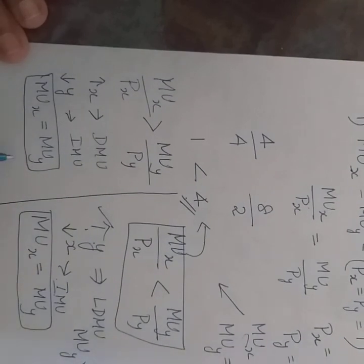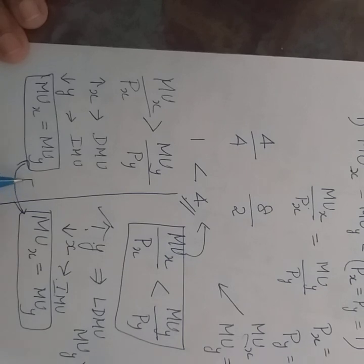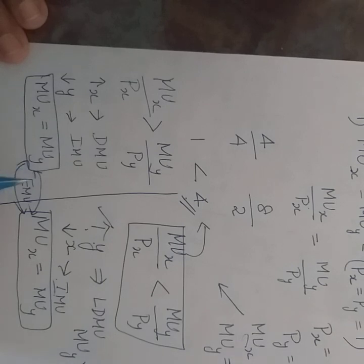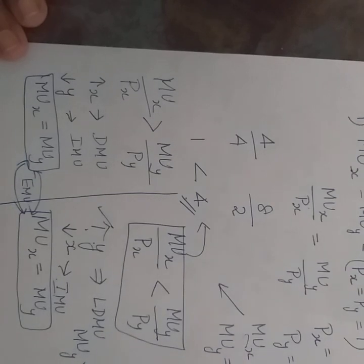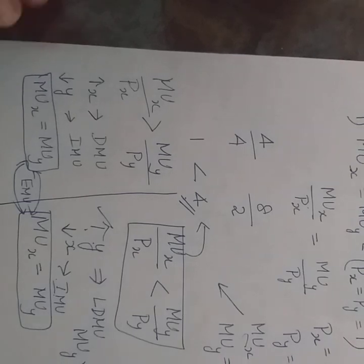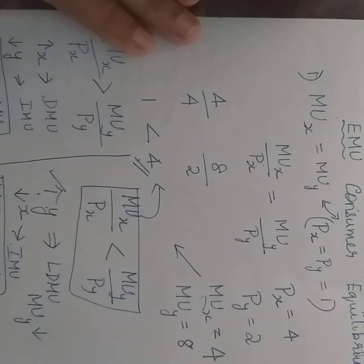This equality of marginal utilities is the condition for consumer equilibrium — this is exactly where the consumer attains equilibrium when there is equality of the marginal utilities of the two commodities. I hope you have understood that. I will explain the ordinal theory in my next clipping. Thank you.